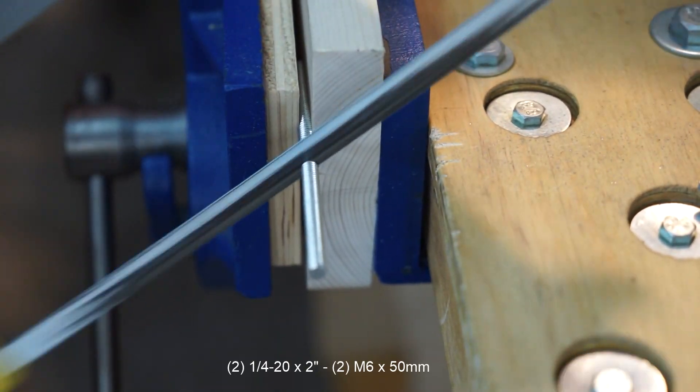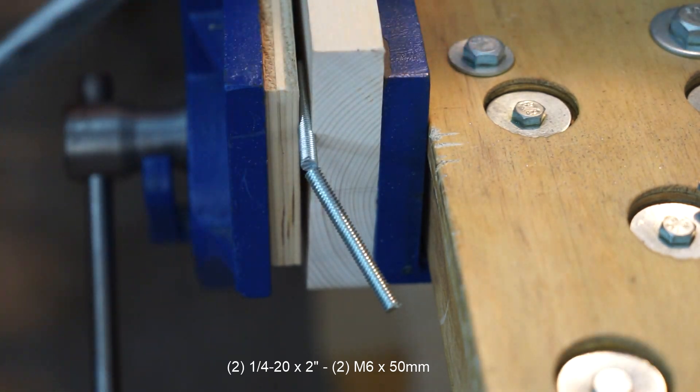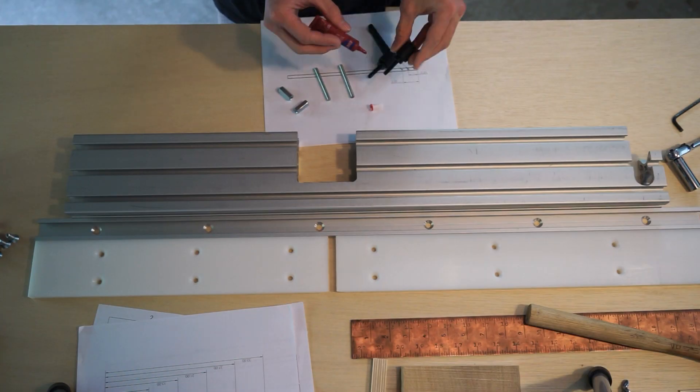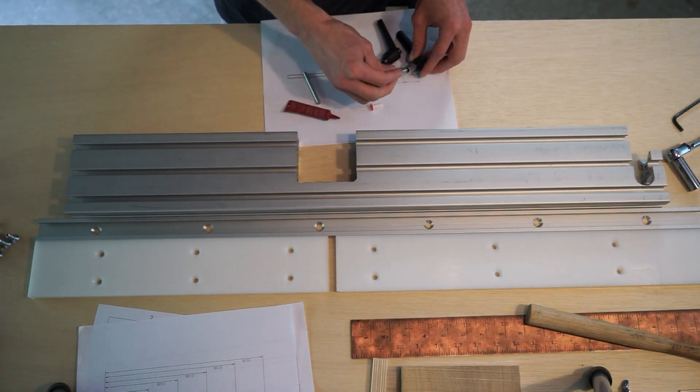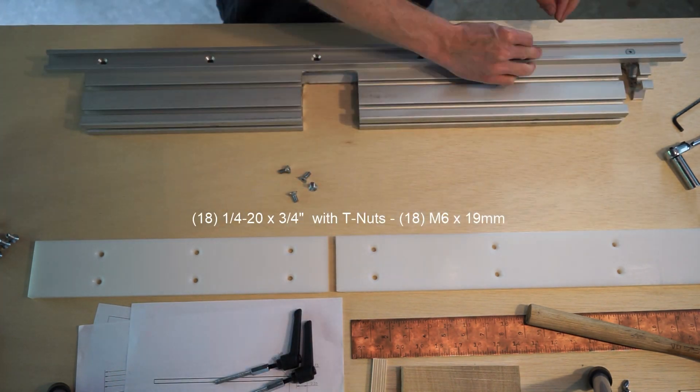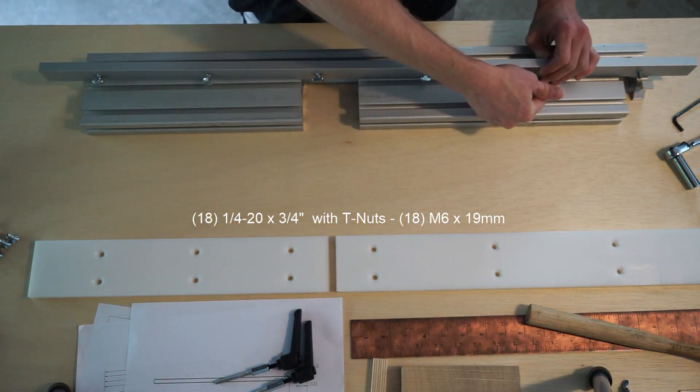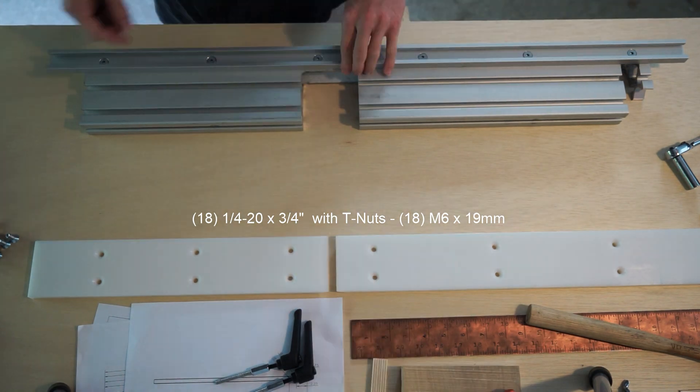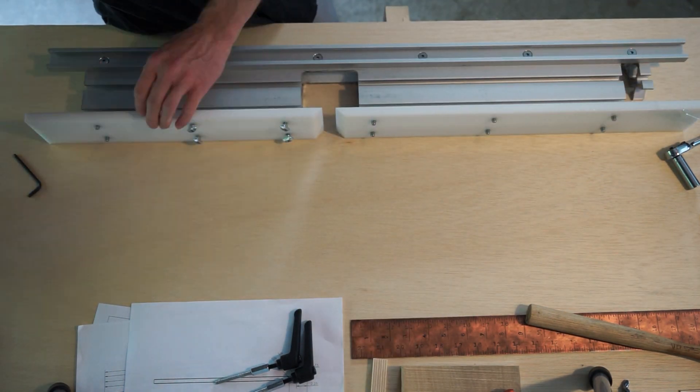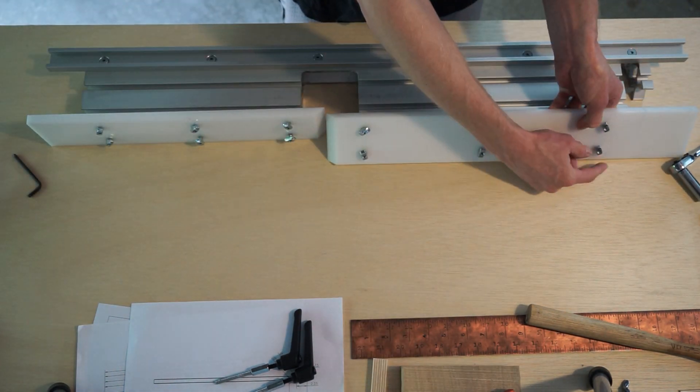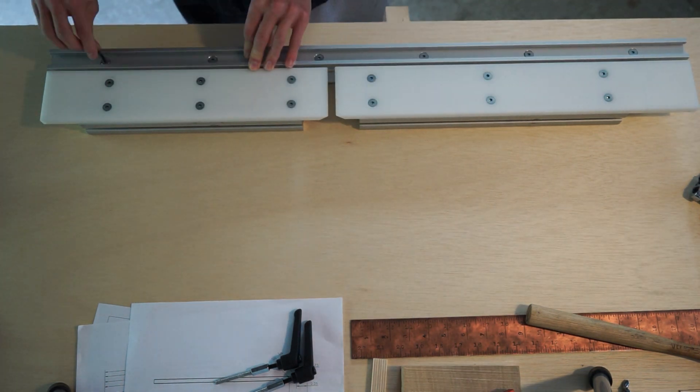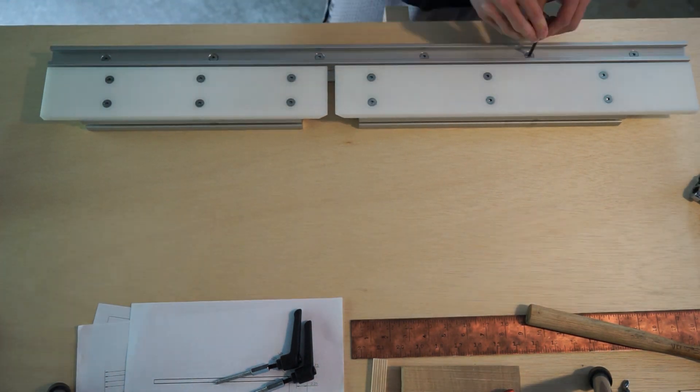With the two lengths of quarter-twenty threaded rod, all the parts were ready to assemble. The standard 80-20 drop-in T-nut was used for these, but I think I would go with a different style that always stays at the correct orientation. These don't seem to reliably lock in place some of the times.